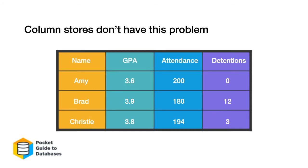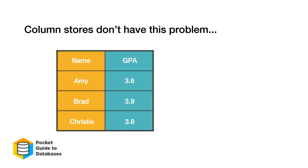Column stores are the exact opposite and are optimized for high read throughput. While row stores store every row as an individual object, column stores store each column as a different object — so the name column is one object, GPA is one object, attendance is one object, detentions is one object. If you're pulling name and GPA from a column store, you just pull name and GPA — no pulling the entire table and filtering. At scale, this saves a lot of processing power and additional operations, especially on complex queries.